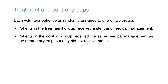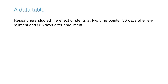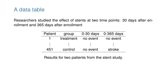In this study, the control group provides a reference point against which we can measure the medical impact of stents in the treatment group. Researchers studied the effect of stents at two time points: 30 days after enrollment and 365 days after enrollment. The results of two patients are displayed in the table below. Patient outcomes are recorded as stroke or no event, representing whether or not the patient had a stroke at the end of a time period.